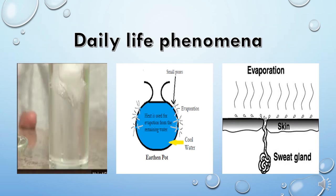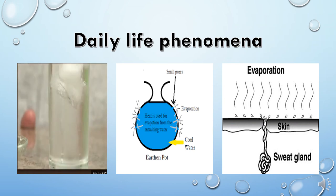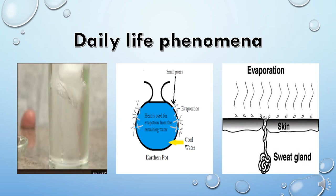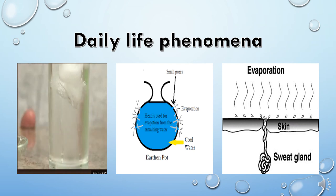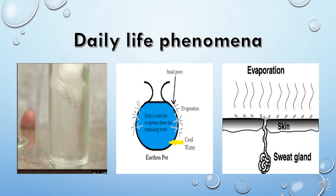If something is kept open, evaporation always takes place. In a clay pot, the pores allow evaporation. Similarly, our skin has very minute pores, and when sweat glands release sweat, that sweat is exposed to the air from our skin and evaporates. The sweat particles absorb heat from our body itself, and our body feels a cooling sensation. Plants also experience a cooling effect due to transpiration, because transpiration is a kind of evaporation.